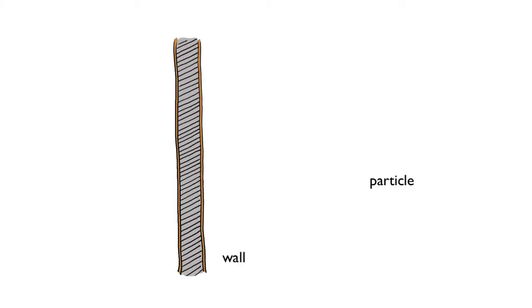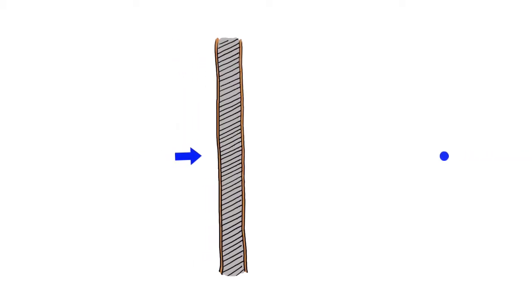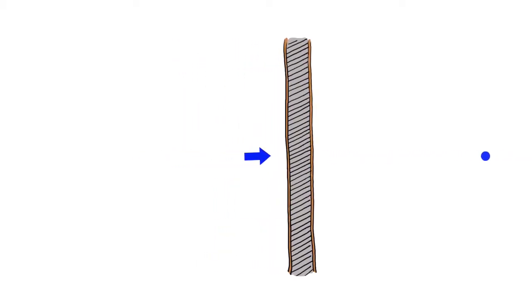A particle hits a wall. In a perfectly elastic collision, it bounces back at the same speed. But what if the wall were moving toward the particle? After bouncing, the particle would be moving faster after getting hit by the moving wall.